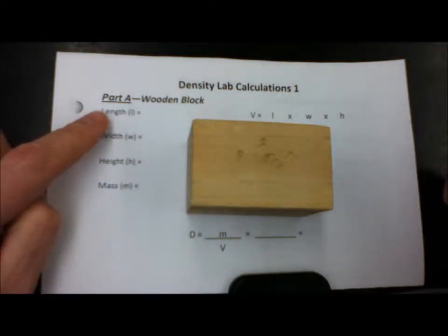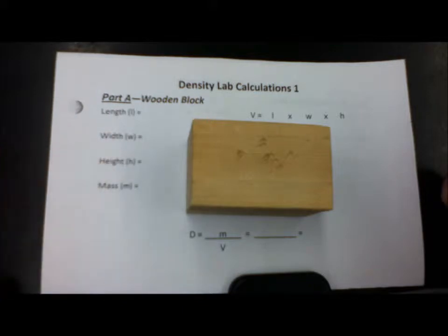So the first thing we want to do is write down the length, the width, the height, and the mass of our wooden block.